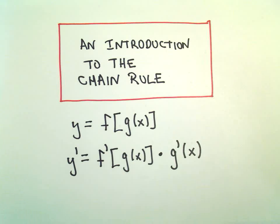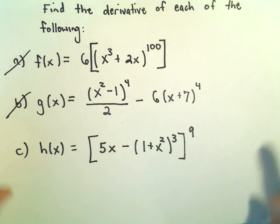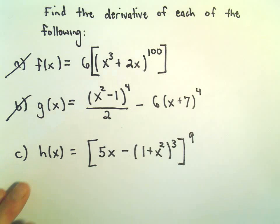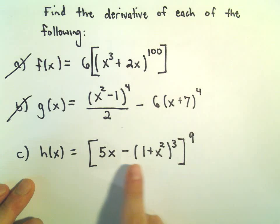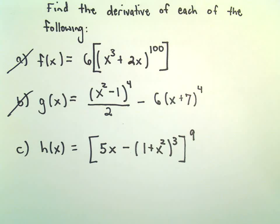Alright, so now we're going to look at one last example of finding a derivative using the chain rule. Here we've got 5x minus 1 plus x squared cubed, all raised to the 9th.